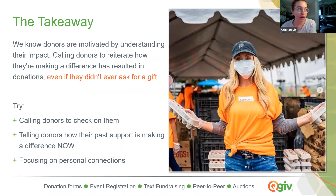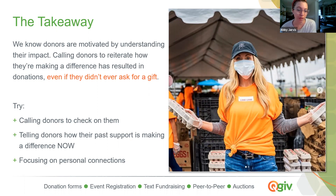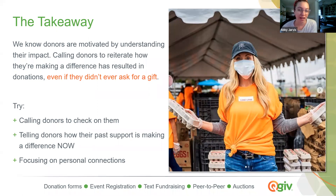Donors are motivated by understanding their impact and by connecting with real people who are passionate about the same things they are. You can call your donors and just ask them how they're doing — that's the relationship piece. You can also tell them how their money has made a difference in the past, giving them an update about what you've been doing with the money they've given you, and they will be more likely to give again in the future. This is a great activity before you're in fundraising mode. If you've ever had a friend that calls you only when they want something, you can do this activity and not be that person. You can build a relationship here without asking.